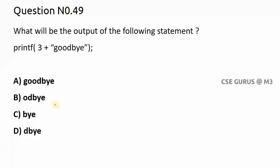What will be the output of the following statement? So printf 3 plus in double quotes we have written goodbye. So how it will consider when you write like this statement? It will consider if you write three, means it will skip in your double quotes three symbols. First three symbols it will skip and whatever the remaining, from that it will print.